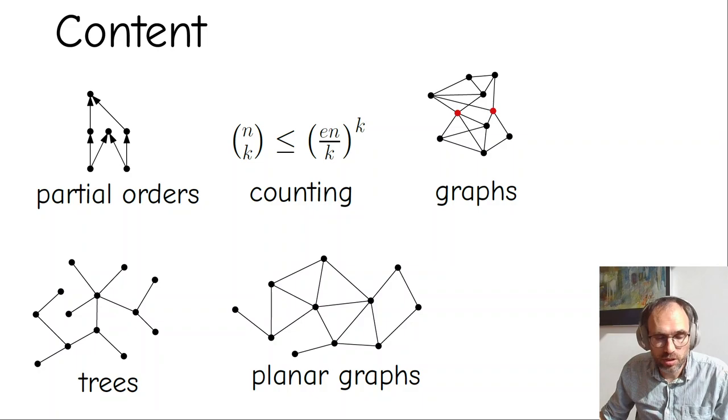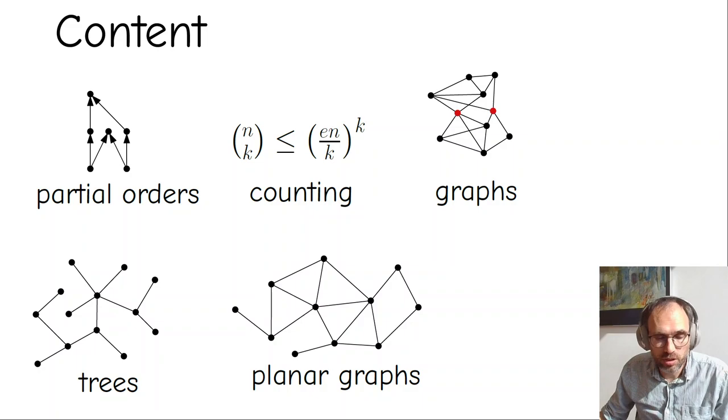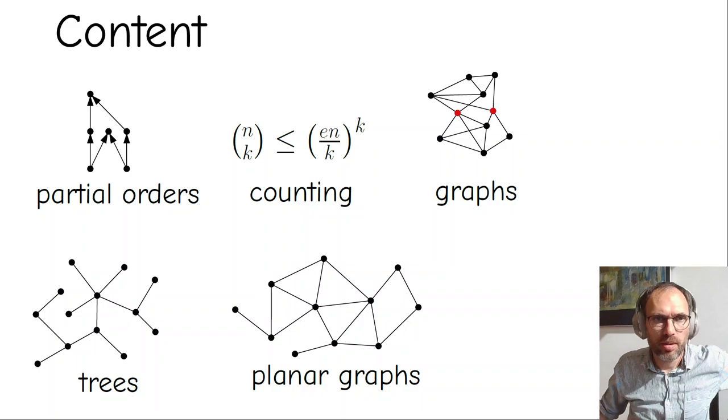So let me start with the content of the course. The content will be about basics of discrete mathematics or combinatorics and we will cover five subjects. The first is partial orders. So these are relations where elements are comparable but not everyone is comparable and we still have transitivity and we prove some structural theorems about those.